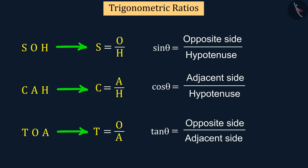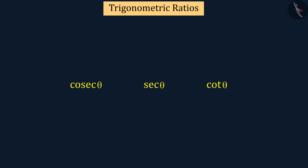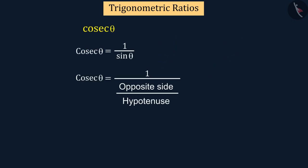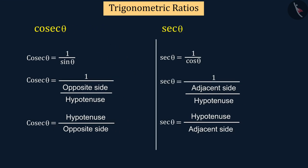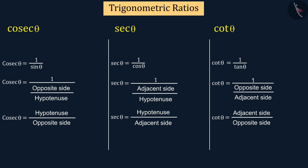With the help of these three trigonometric ratios, you can also find the values of cosec, sec, and cot. Here, cosec is the inverse of the sine, that is, the ratio of the hypotenuse and the opposite side. Similarly, sec is the inverse of cos, and cot is the inverse of tan.